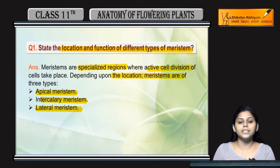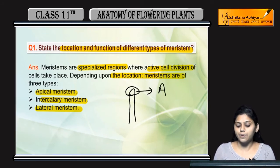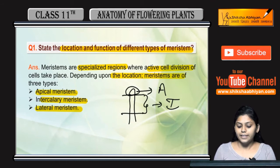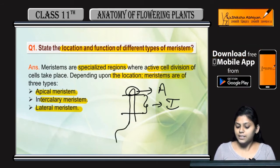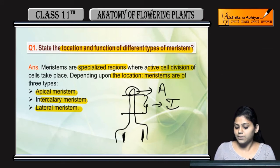Apical meristem apex pe, means tip pe present ho ga. Intercalary meristem is present between mature tissues, and the lateral meristem is present laterally, lateral side mein present ho ga.